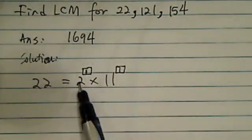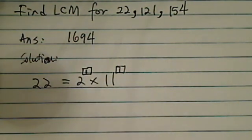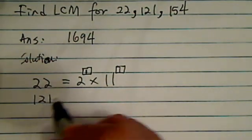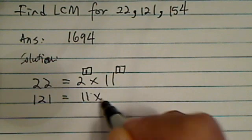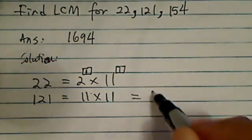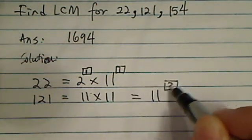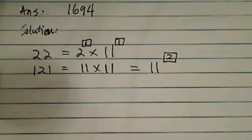2 times 11 is really 2 to the 1 times 11 to the 1. Next one, 121 is really 11 times 11, or we're going to write 11 to the hat of 2, because there's a square term.